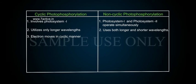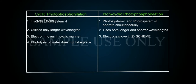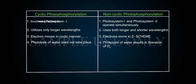Point 3: In cyclic photophosphorylation, electrons move in a cyclic manner, whereas in non-cyclic, electrons move in a Z scheme. Point 4: Photolysis of water does not take place in cyclic photophosphorylation, whereas in non-cyclic, photolysis of water results in liberation of O2.